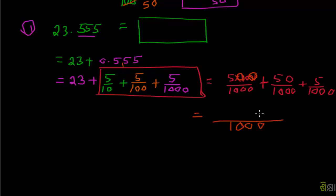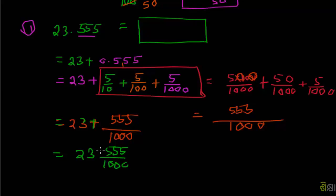525 plus 555, this is 555, so we will complete 555. We will complete the fraction. 5 divided by 5, which equals to 23. This is the answer.